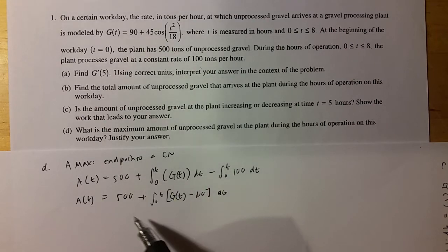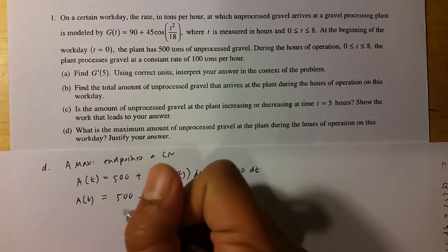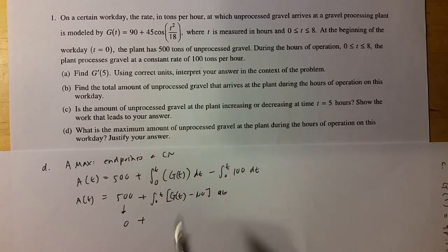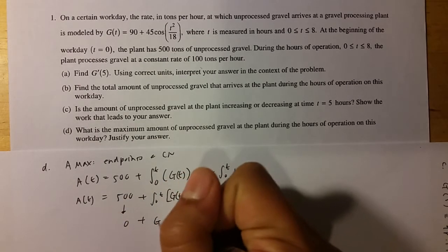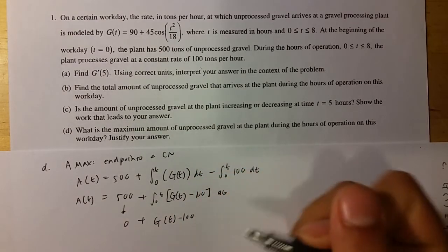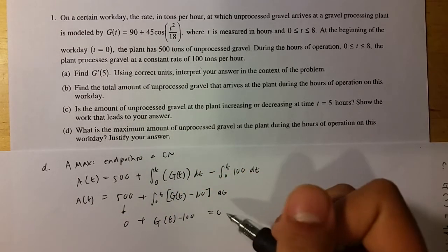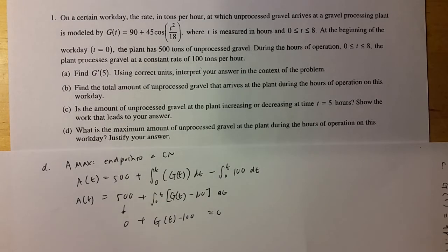And remember to find critical numbers, you take the derivative of this. So the 500 is constant. It becomes zero. And then to do this, you just use the fundamental theorem of calculus. And you just plug the T back in, right? So it should just be G of T minus 100. So then to find the critical numbers, you set this equal to zero.